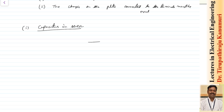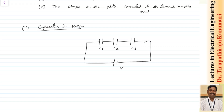Let us assume I have a set of capacitors connected in series. Three capacitors are connected having values C1, C2, and C3, connected to some voltage source V. In a series circuit the current will be same, and when the current is same, the charge accumulated on all these plates will be same. So each capacitor will have plus Q on one plate and minus Q on the other. The voltage divided across each capacitor is V1, V2, and V3 respectively.